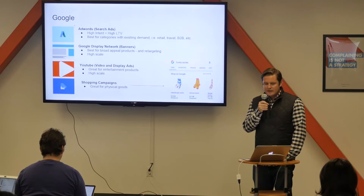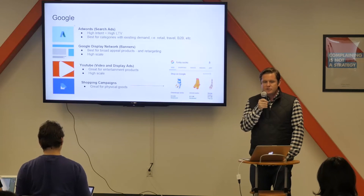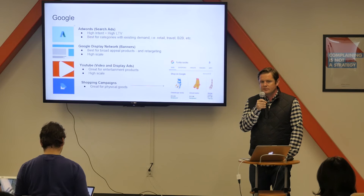Moving on to Google — just to give you a refresher, Google has four products that work for mobile: AdWords first and foremost, the Google Display Network (which used to be AdMob and has evolved since then), YouTube, and shopping campaigns. AdWords should generally be your starting point. If there's demand for your product — let's say you're an e-commerce company, a ride-sharing company, a travel company — things that people are actively searching for, you should be in the Google results.